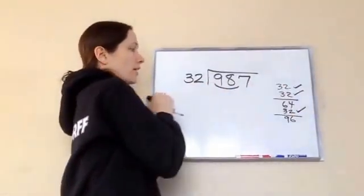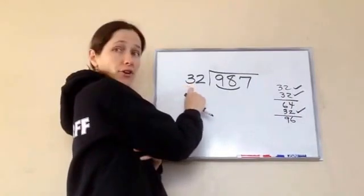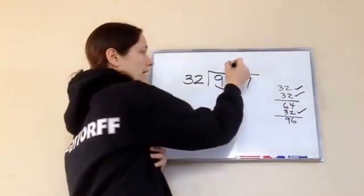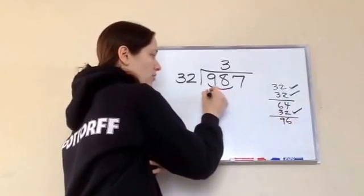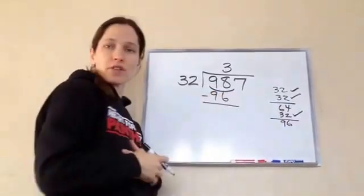Three. One, two, three. So we're looking at 32, how many 32s are going into 98? We said three, and that equaled 96. Good. Finish out working it.